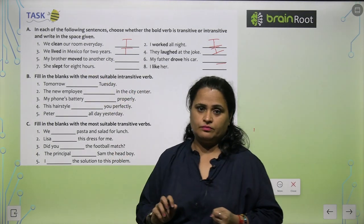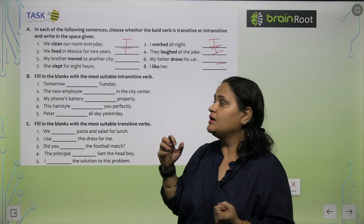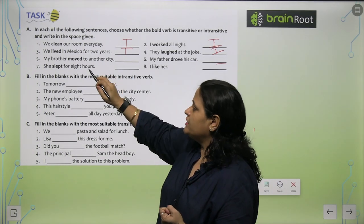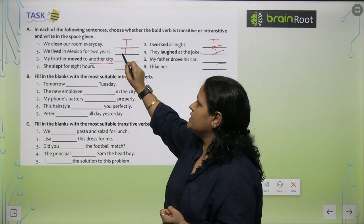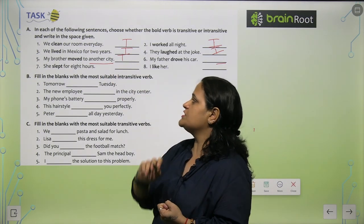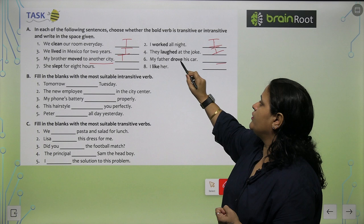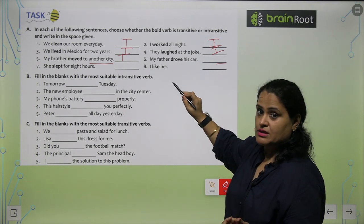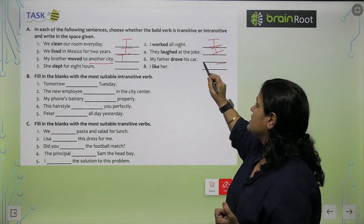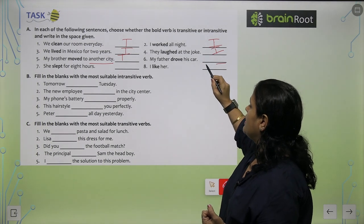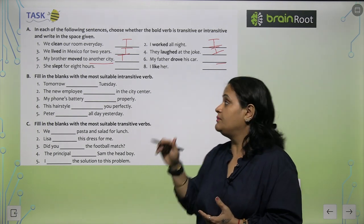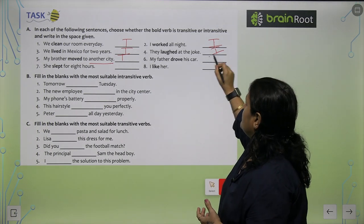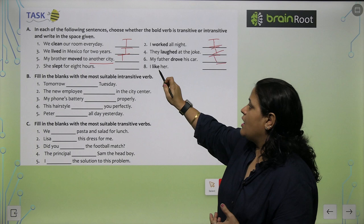We lived in Mexico for two years, this is transitive. They laughed at the joke, this is intransitive because they laughed ye apne aap mein verb meaning ko pura kar rahi hai. My brother moved to another city. Another city is the object here, so this is transitive verb.